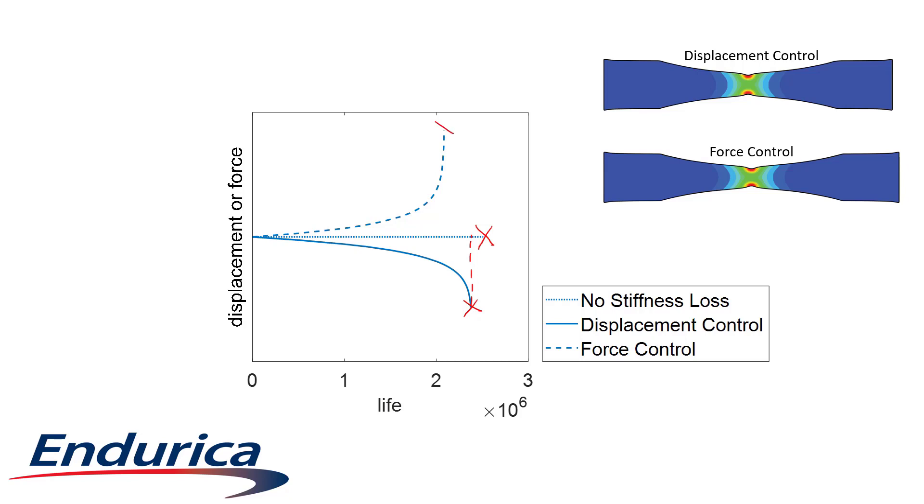For the force-controlled case with stiffness loss, the change in displacement is plotted over time. Notice how the displacement increases as the material loses stiffness until end of life.